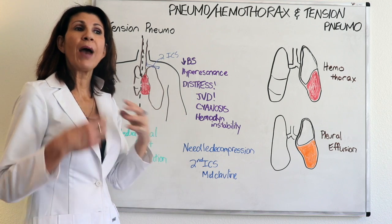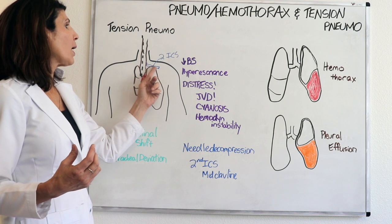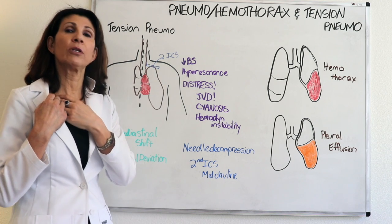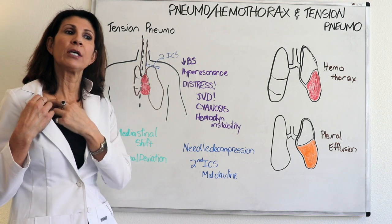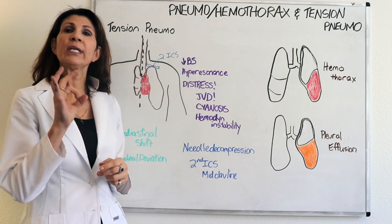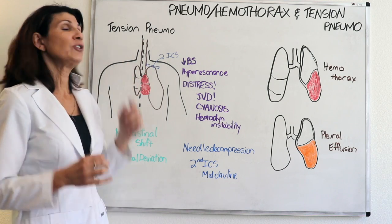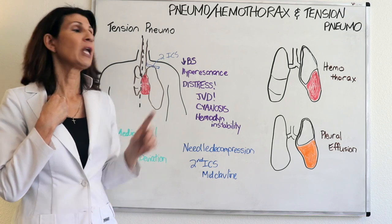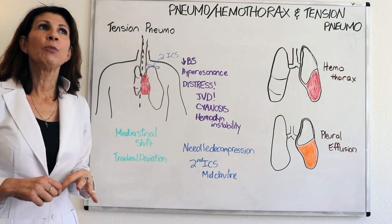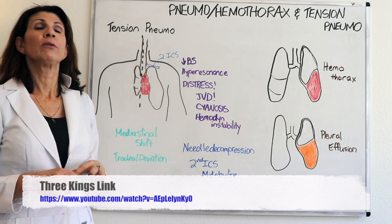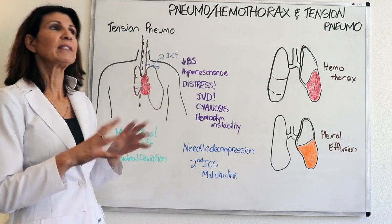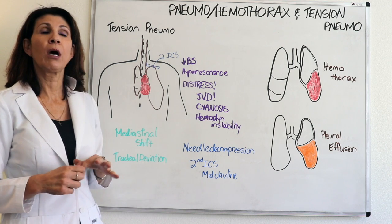You have to decompress — remove the air from the affected side. The second intercostal space is located just below the clavicle; you can locate it on yourself. The way you decompress a tension pneumothorax is with a large-bore needle, like a 14-gauge needle, inserted into the second intercostal space at the mid-clavicular line to allow the air to escape from the affected side. There's a movie with George Clooney and Mark Wahlberg called Three Kings where George Clooney performs it in the field — it shows a cartoon version of needle decompression of a tension pneumothorax.